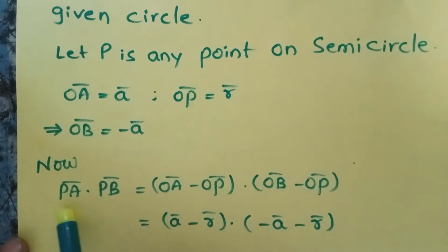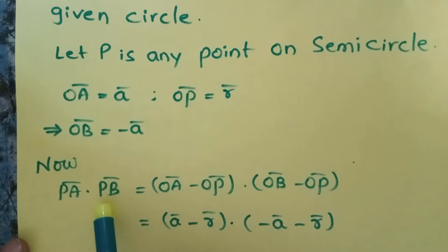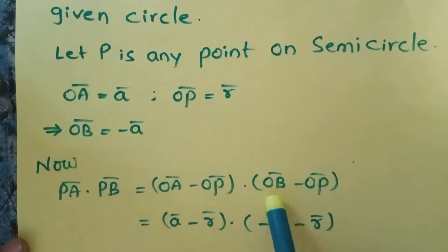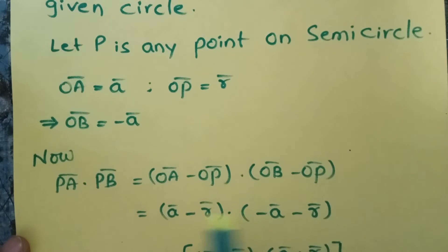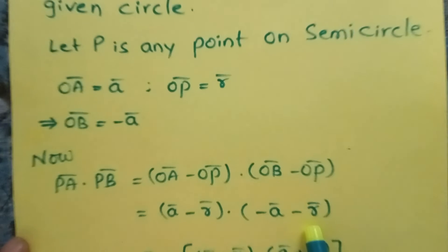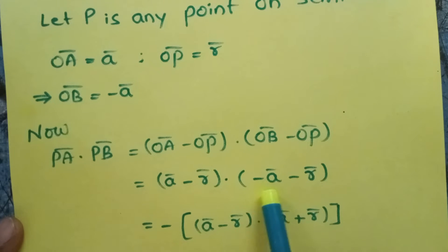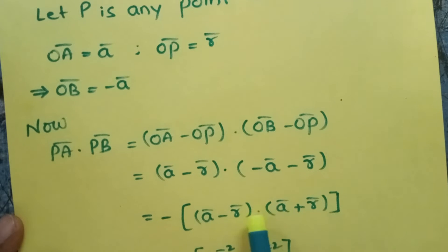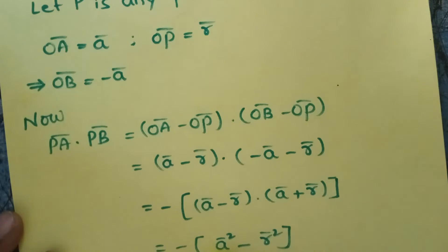Now, I am taking PA dot PB. Why? Because we have to show that the angle between PA and PB is 90 degrees, that is why I am taking PA dot PB. PA dot PB is equal to: PA equals OA minus OP, and PB equals OB minus OP. Now substituting: OA value is A bar, OP value is R bar, OB value is minus A bar, OP value is minus R bar. Taking minus common, we get (A minus R) dot (A plus R), which equals A squared minus R squared. Since A equals R,